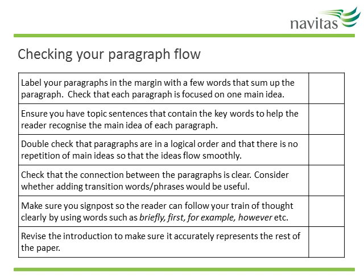Finally, this checklist can help you with your paragraph flow. First, label your paragraphs in the margin with a few words that sum up the paragraph, and check that each paragraph is focused on one main idea only. Second, ensure you have topic sentences that contain the keywords to help the reader recognise the main idea of each paragraph. Third, double-check that paragraphs are in a logical order and that there is no repetition of main ideas, so the ideas flow smoothly. Fourth, check that the connection between paragraphs is clear — consider whether adding transition words or phrases would be useful. Fifth, make sure you signpost so the reader can follow your train of thought by using words such as 'briefly,' 'first,' 'for example,' 'however,' and so on. Finally, revise the introduction to make sure it accurately represents the rest of the paper.